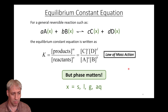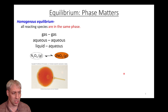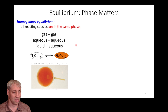The thing we have to take into consideration when writing this equation is that phase matters — whether something's solid, liquid, gas, or aqueous, it's going to change how we write this equilibrium equation. For homogeneous reactions, we're talking about gas-gas, aqueous-aqueous, or liquid-aqueous — they're both in the same phase, just like homogeneous catalysis. Same thing is true with equilibrium.